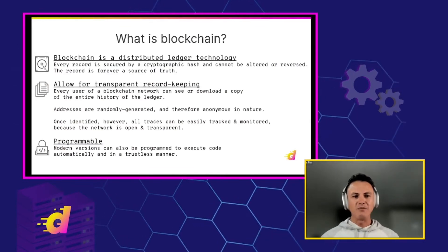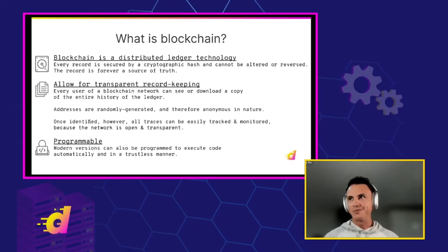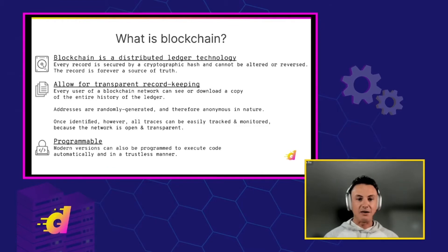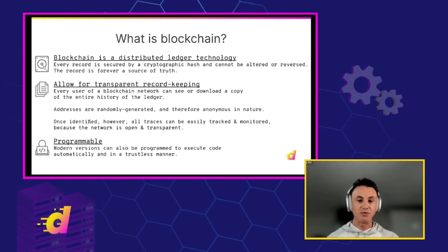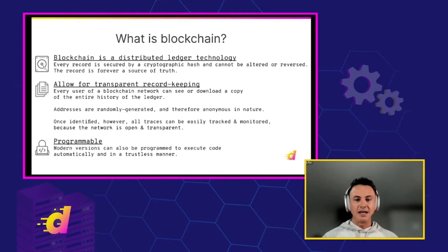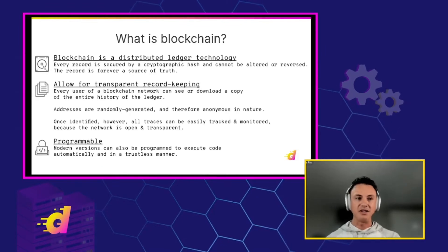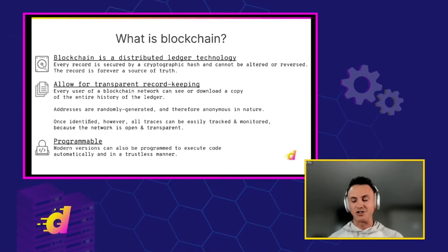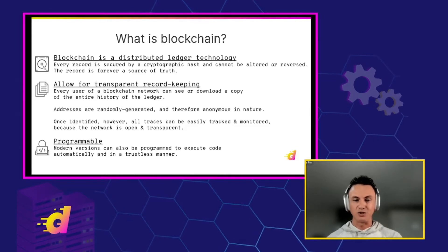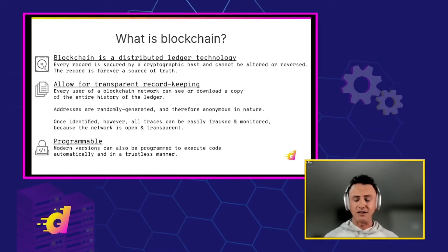So if you haven't heard about it yet, blockchain is essentially a distributed ledger technology. You can think of it as a large Excel spreadsheet that has a record of who owns what and allows for transparent record-keeping. Every user on the blockchain network can see or download a copy of the entire history of the ledger. Addresses are generated randomly. Modern blockchains are even programmable — you can upload entire pieces of code into cells of the ledger. And then there's also an execution layer, so the blockchain has a virtual machine which understands this language and is able to execute things in the virtual machine around it.